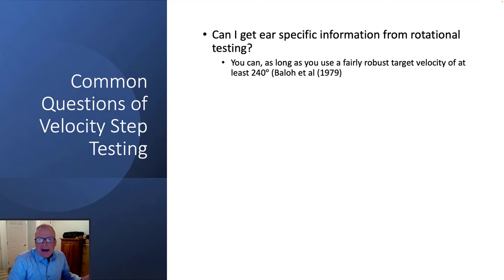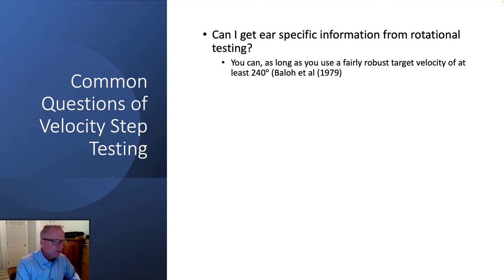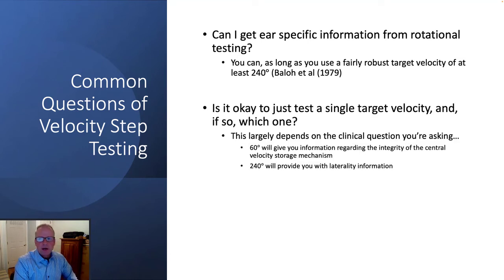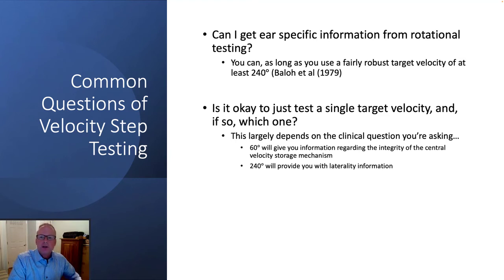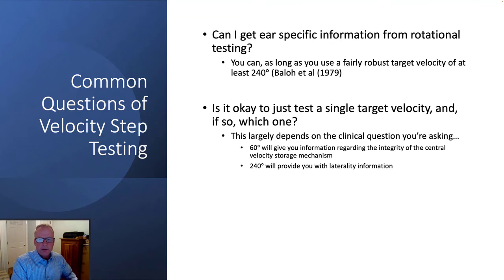So you can provide some ear-specific rotational weakness data, but only if you provide a stimulus that's at least 240 degrees per second. The 60-degree response will give you central function information — how well is the neural integrator working and how well is the velocity storage mechanism storing that afferent data being delivered from the periphery?